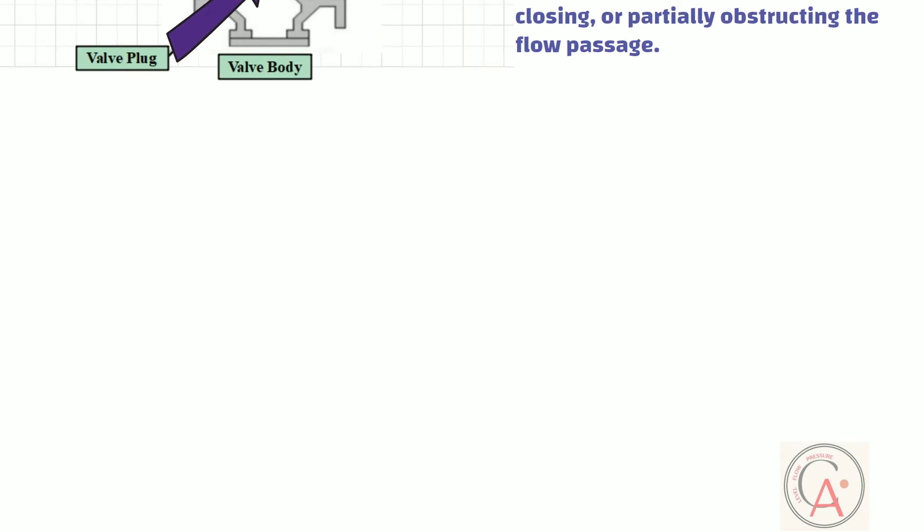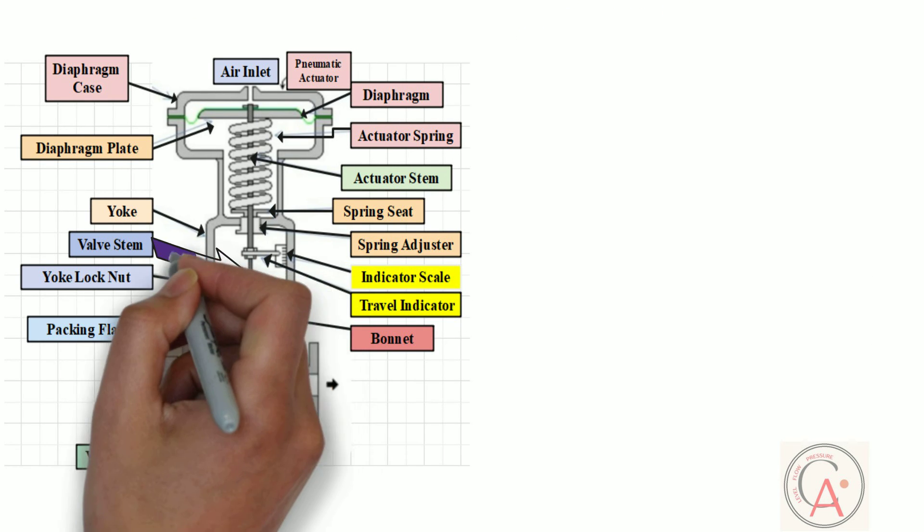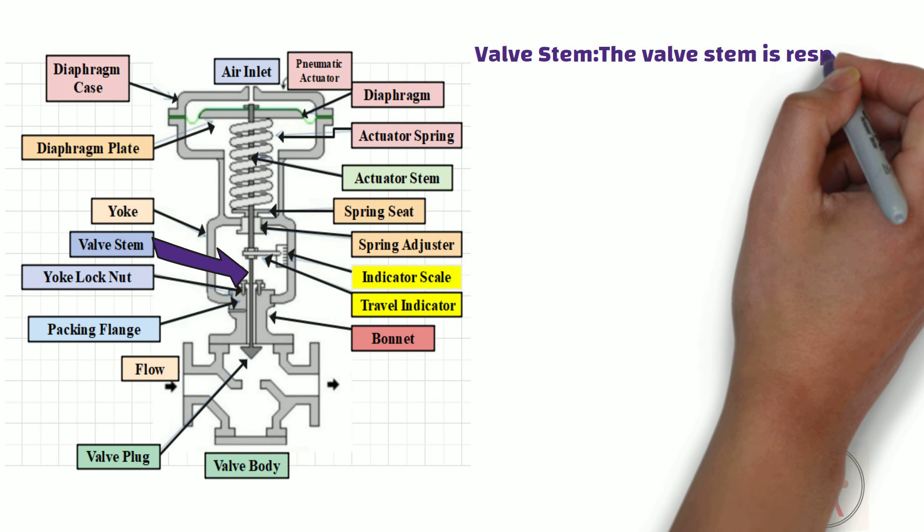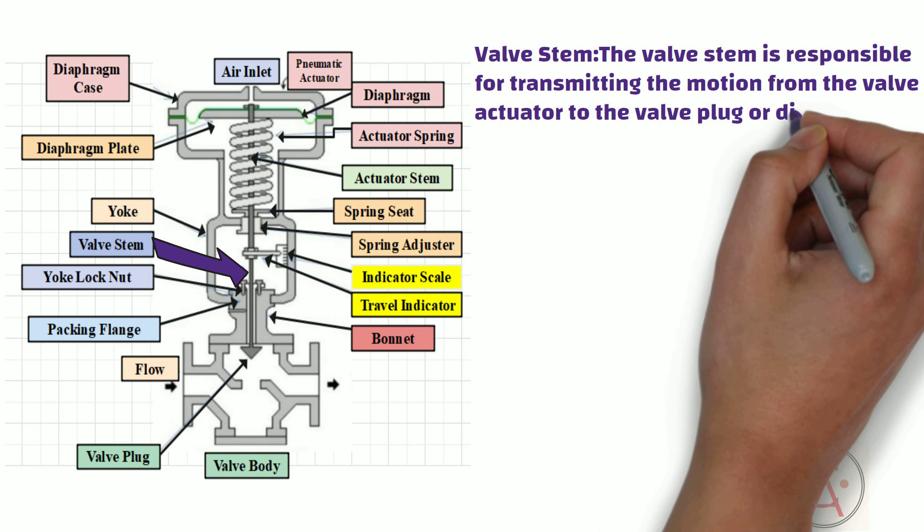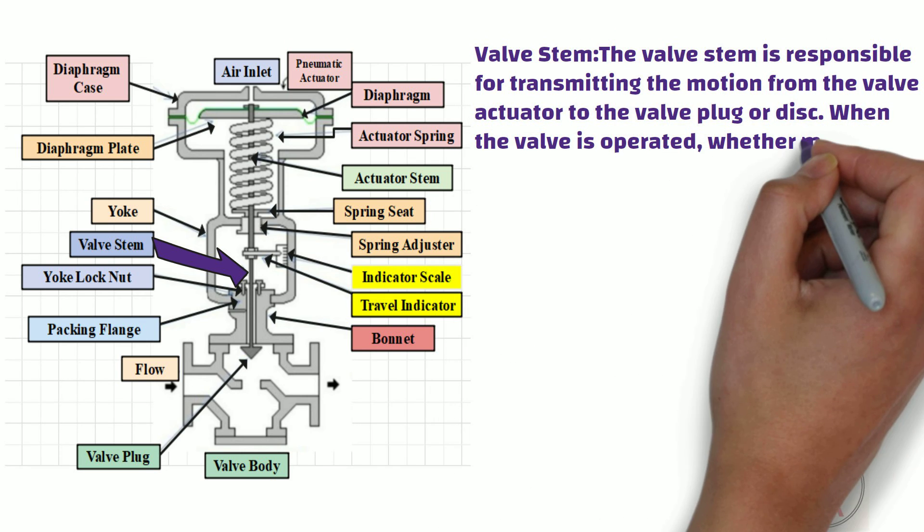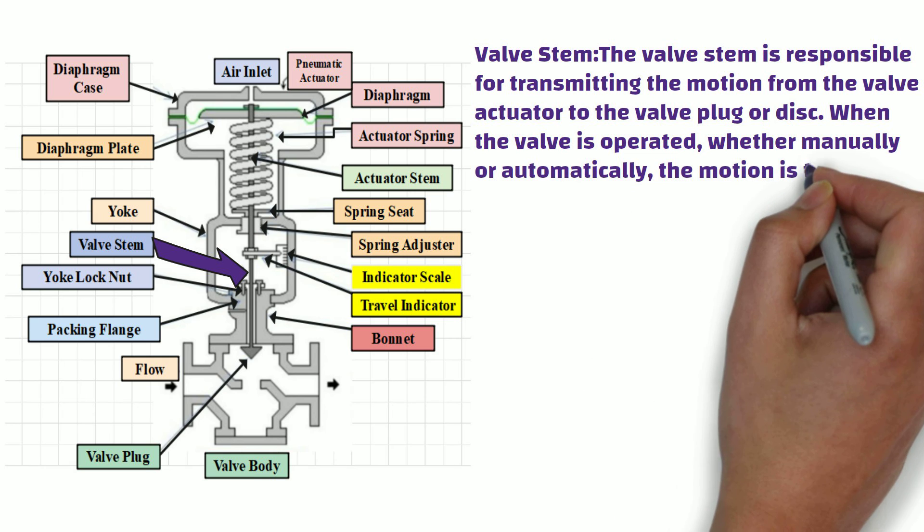This important part of the valve is known as the valve stem. The valve stem is responsible for transmitting the motion from the valve actuator to the valve plug or disc. When the valve is operated, whether manually or automatically, the motion is transferred through the valve stem to open or close the valve.